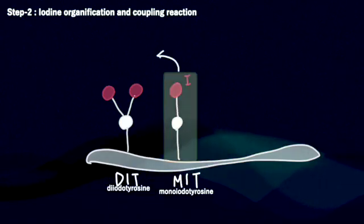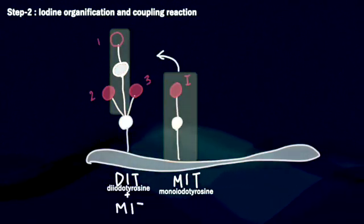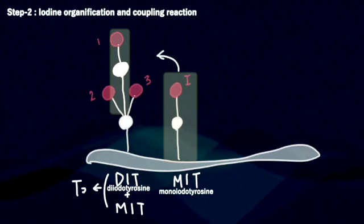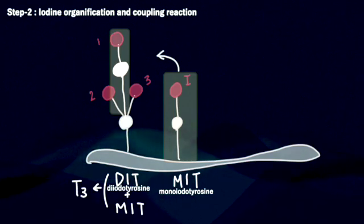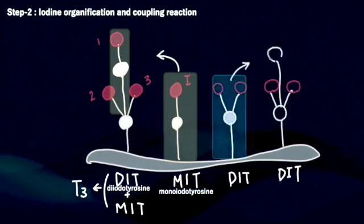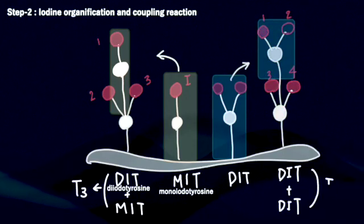Combining MIT and DIT forms gives us triiodothyronine, T3, with three iodines. Combining two DIT forms thyroxine, T4, with four iodines.